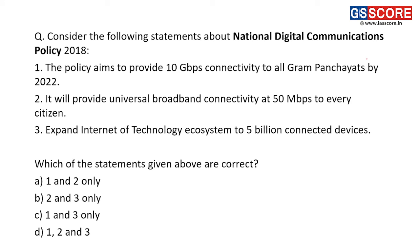Ninth question: consider the following statements about the National Digital Communications Policy 2018. There were various aims of this policy and we need to find which are correct. Statement one: the policy aims to provide 10 Gbps connectivity to all Gram Panchayats by 2022. This is a correct statement — 10 Gbps connectivity will be provided by 2022 and 1 Gbps by 2020. First statement is correct.